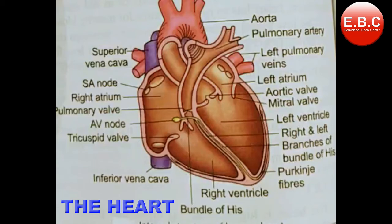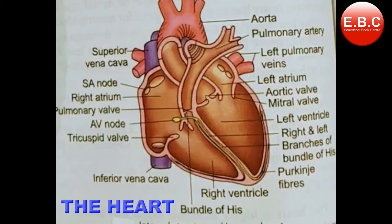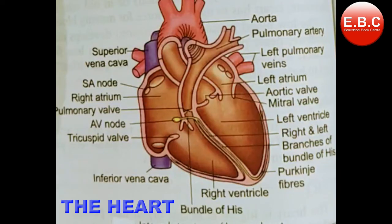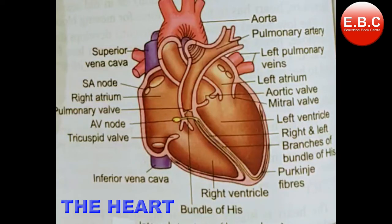Now I will tell you the structure of the heart. The human heart is a four-chambered organ, which is divided by a septum into two halves — the right half and the left half. Each half consists of two chambers: the upper chambers form the right and left auricles.